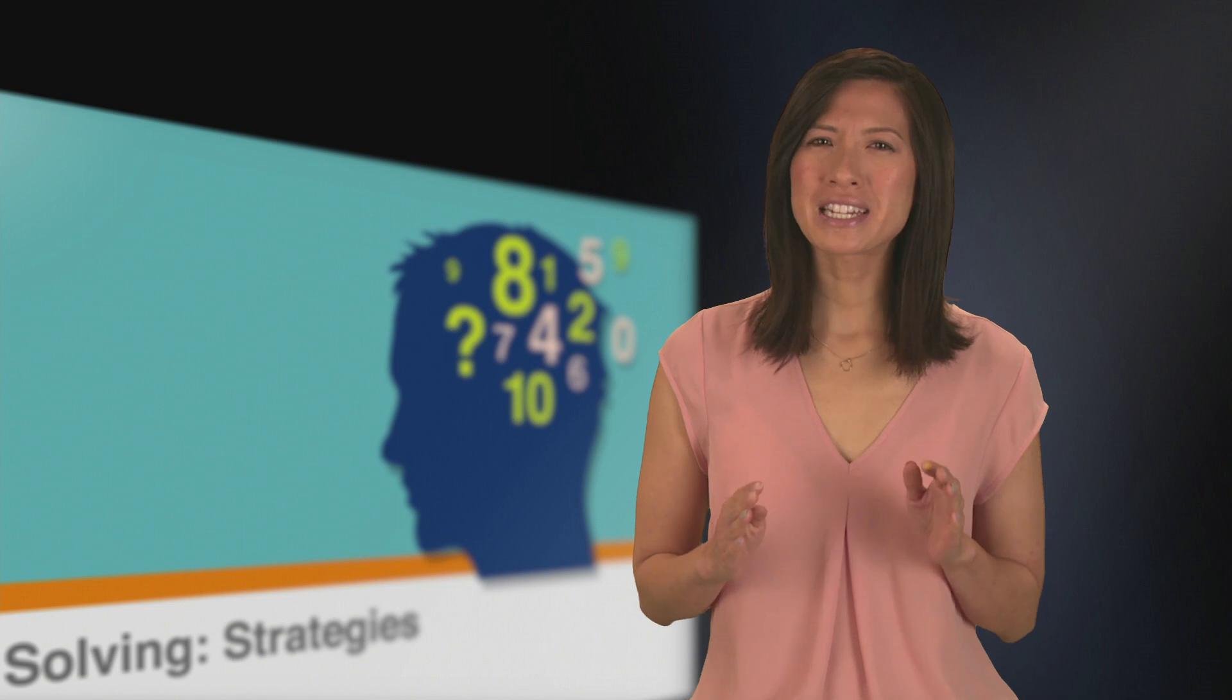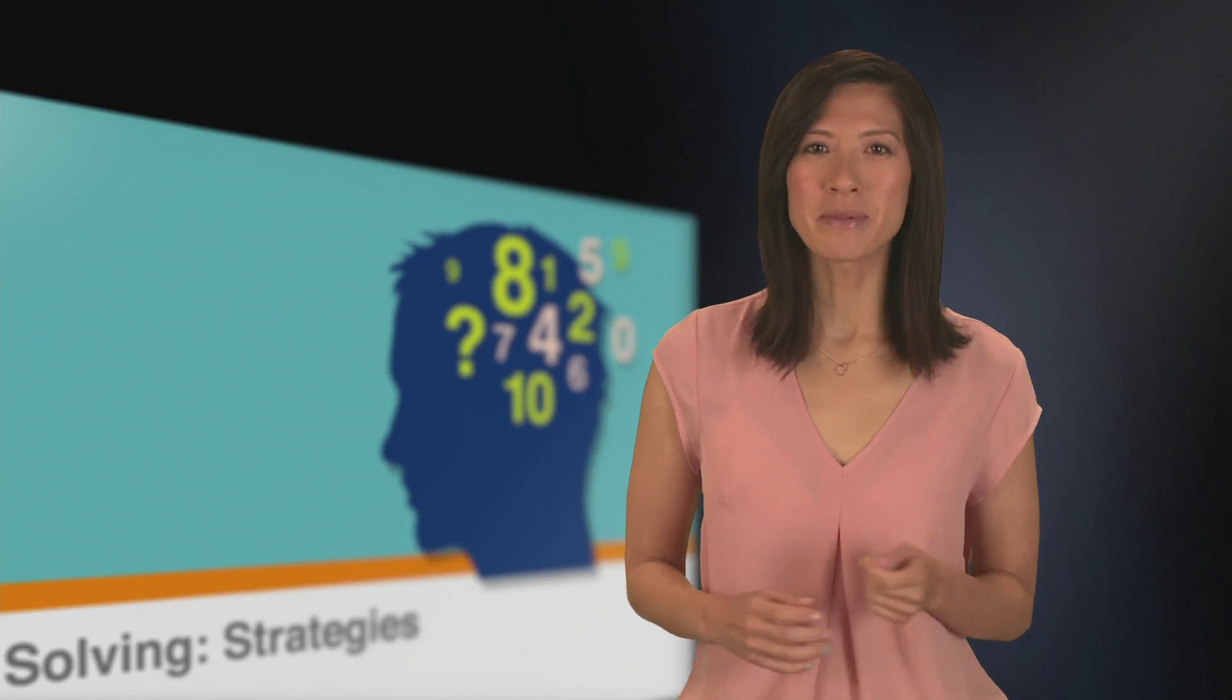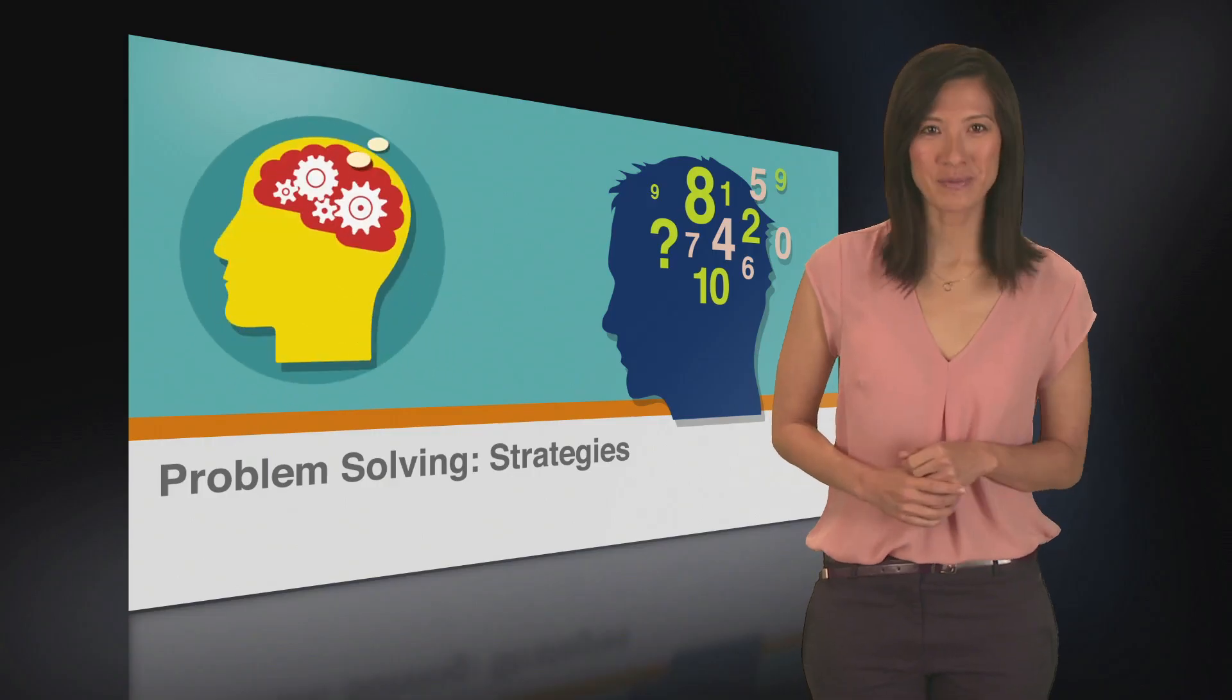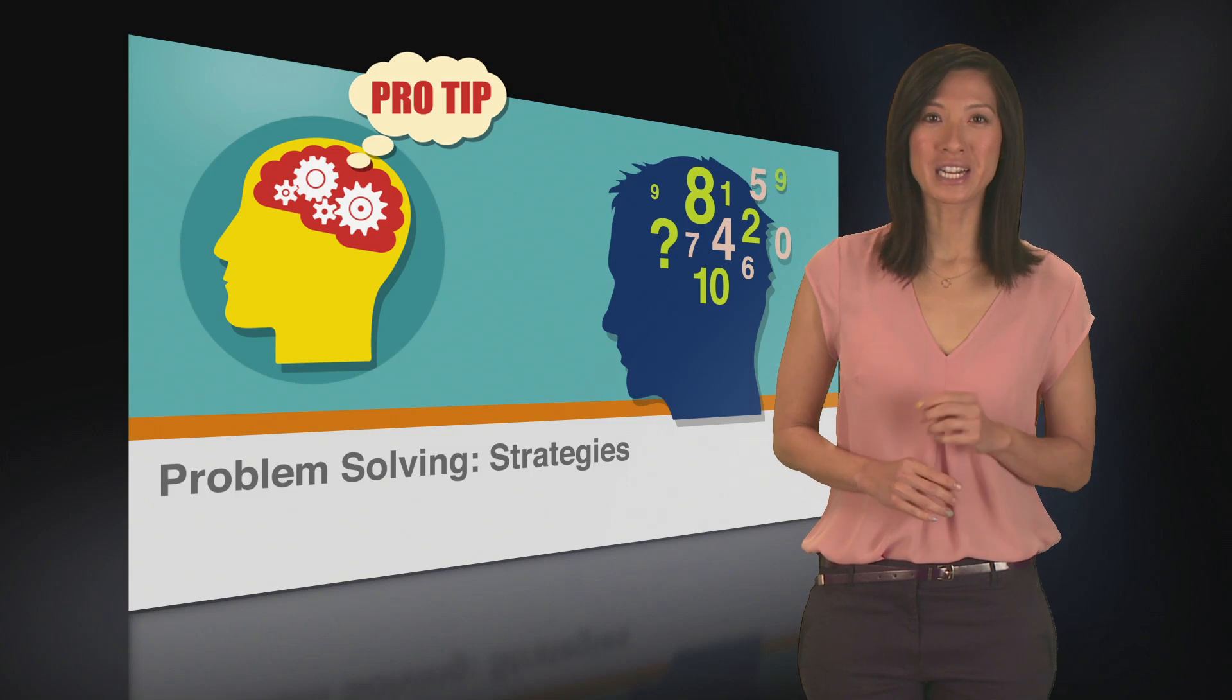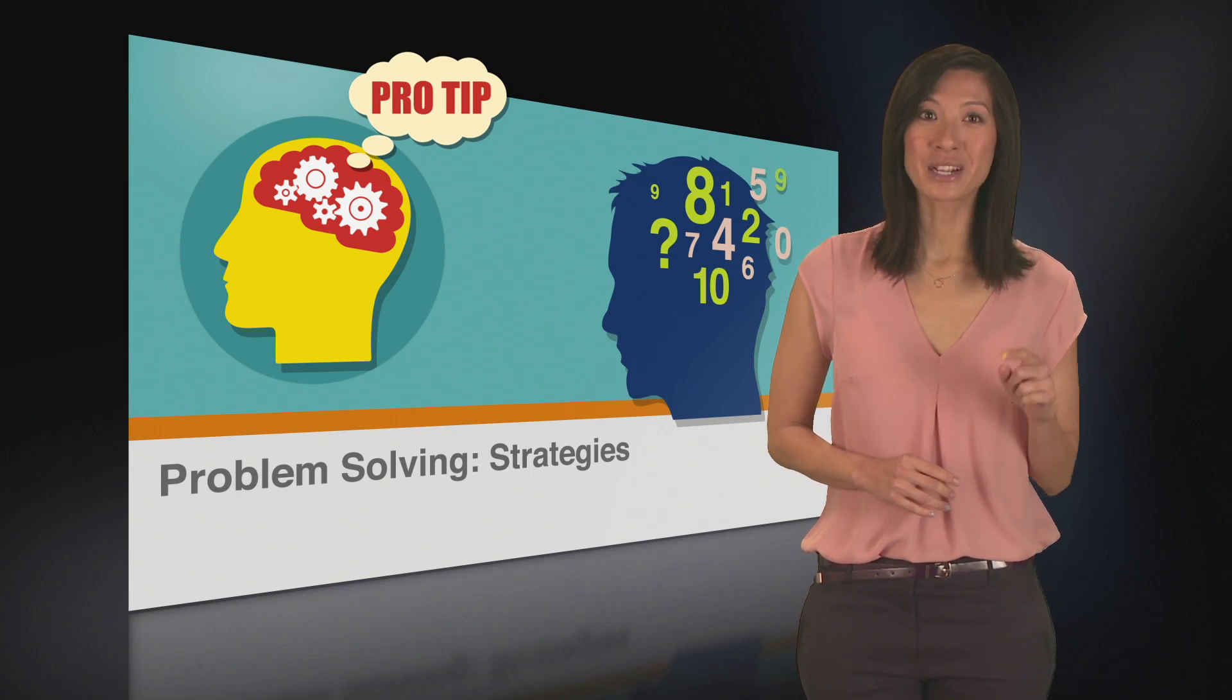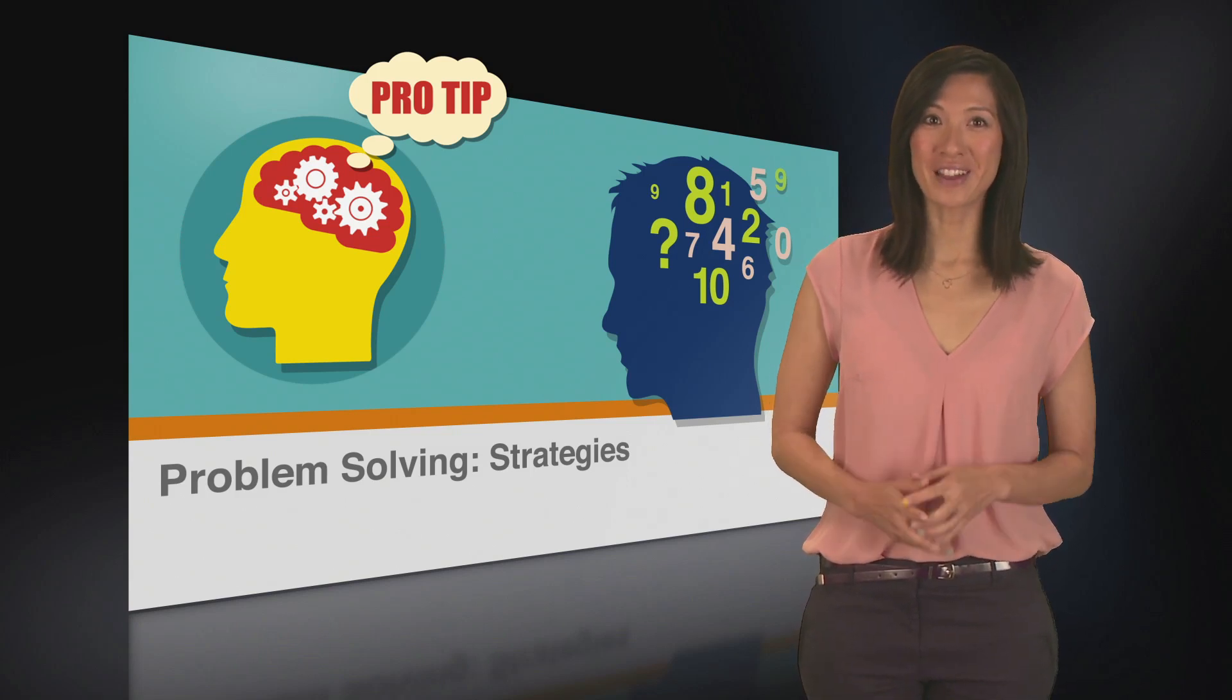When we backsolve, we need to have a process. You will never have enough time to solve for every option, so we'll try to go over the most time efficient way. Here's a pro tip for you. All numeric answer choices in the quantitative reasoning sections are listed in increasing order. So let's take advantage of this.